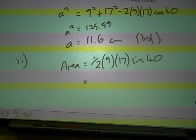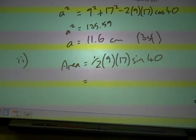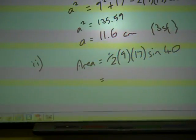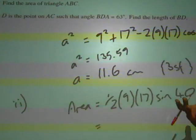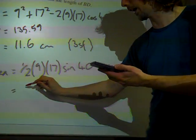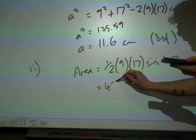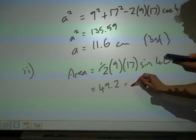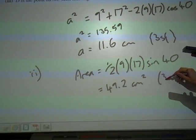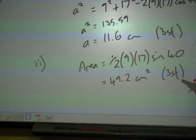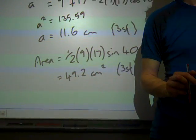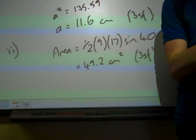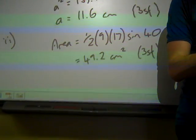If we do that in the calculator — making sure our calculator is in degrees mode, because we're using sine of a degrees figure — we get 49.2 centimetres squared. Again, that's to three significant figures. I'll just store it in memory just in case.